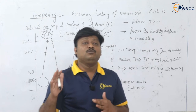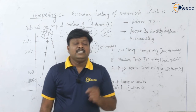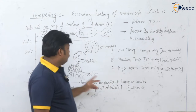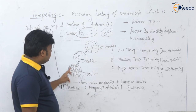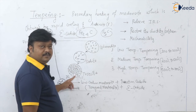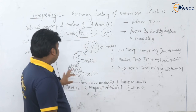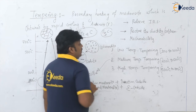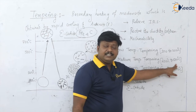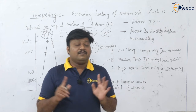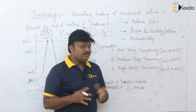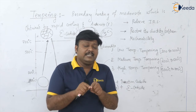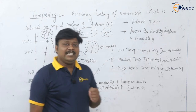When we heat martensite in the range of 200 to 500 degrees centigrade — medium temperature tempering — cementite formation takes place. We can see a very fine distribution of cementite particles in a matrix of ferrite. Ferrite is alpha iron, and in that matrix we have a small fine distribution of these cementite particles. This structure is actually known as troostite.